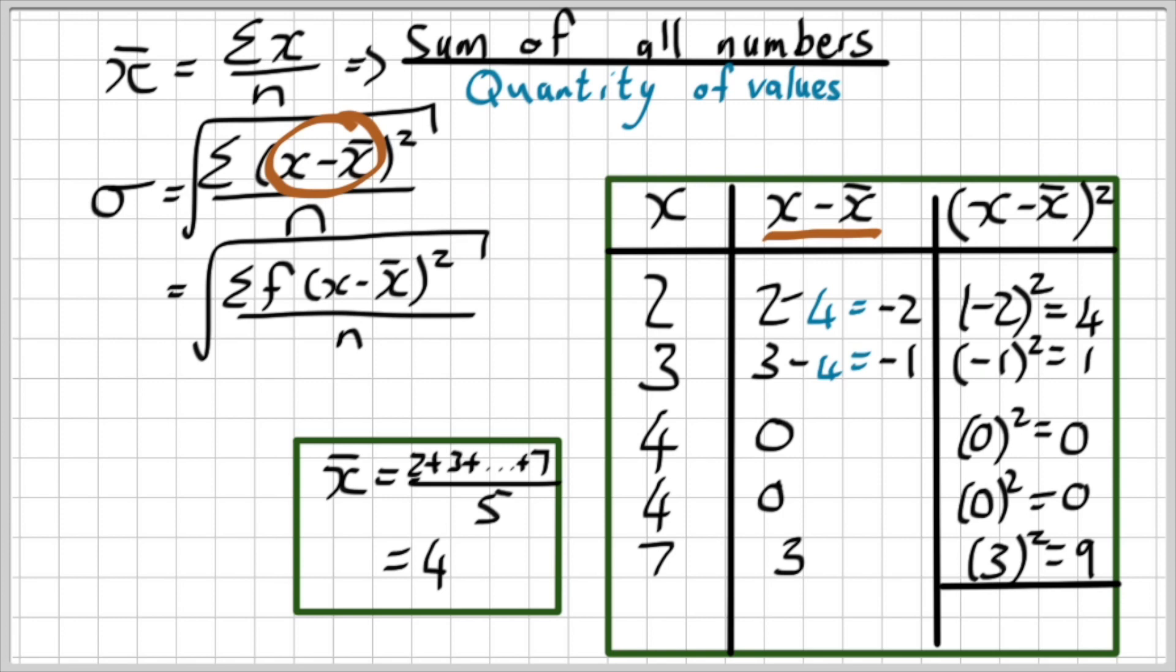Taking seven minus four, which is three—that's why I get that from seven minus four. Squaring it, I've got a value of nine.